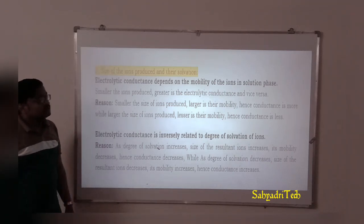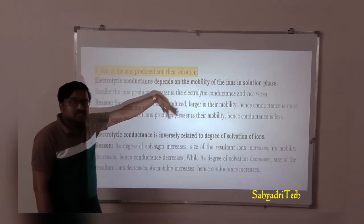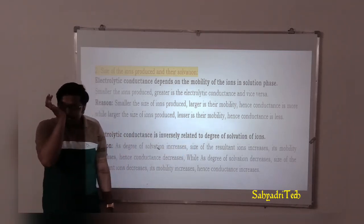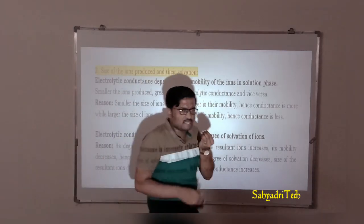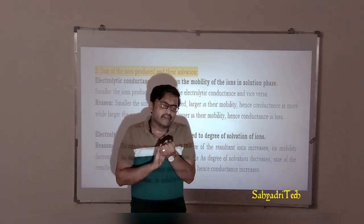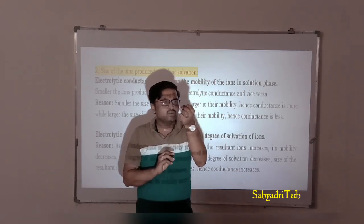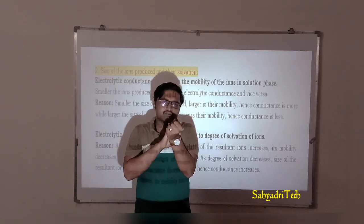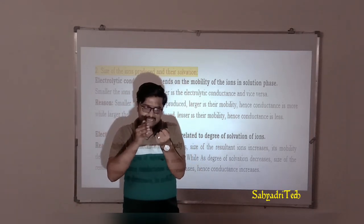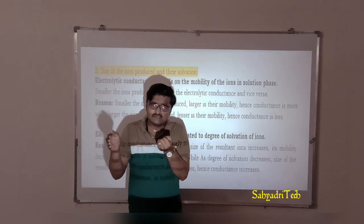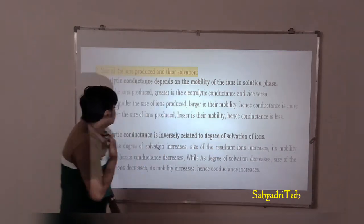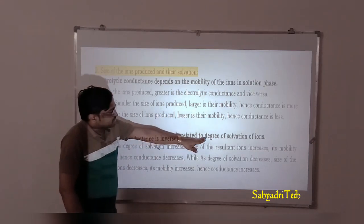Further, under solvation — how solvation affects electrolytic conductance: electrolytic conductance is inversely related to degree of solvation. Solvation is the phenomenon in which ions get surrounded by solvent molecules. When an ion gets surrounded by solvent molecules, the size of the resultant solvated ion increases. As size of the solvated ion increases, mobility decreases, hence conductance also decreases. So electrolytic conductance is inversely related to degree of solvation.